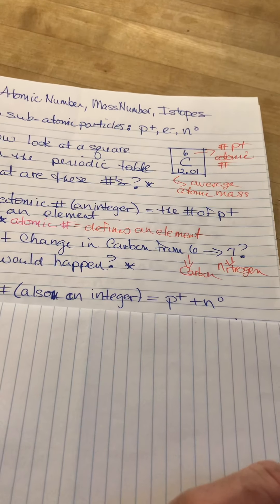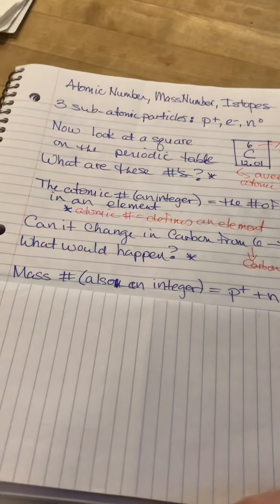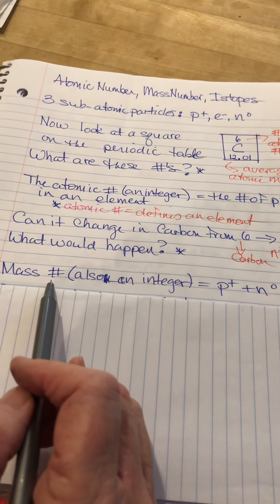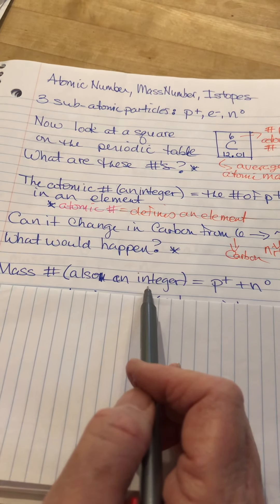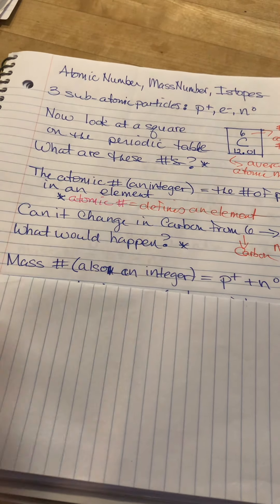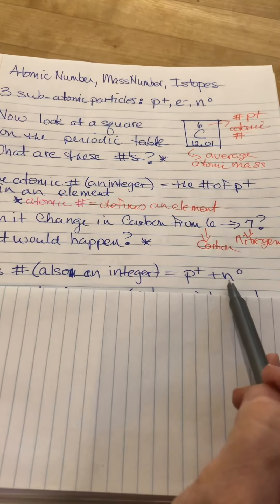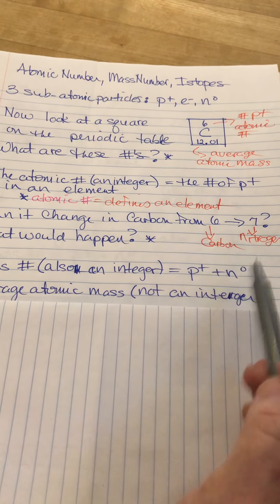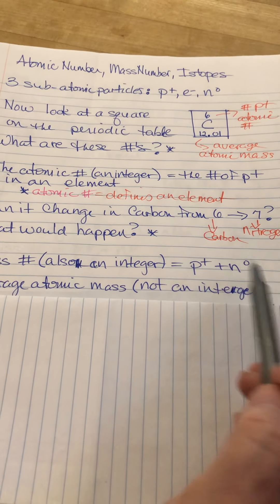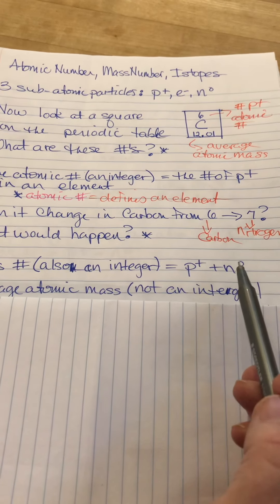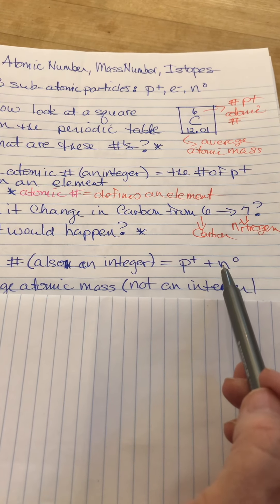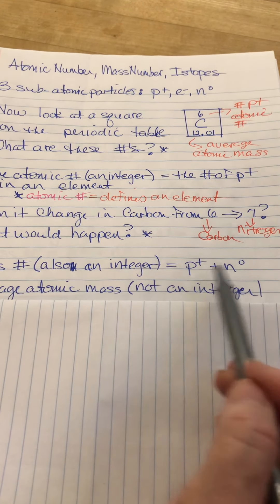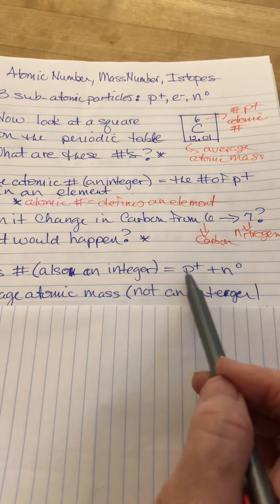There is another number which helps us identify an element, and it is known as the mass number. The mass number is also an integer, and it is the sum of the protons plus the neutrons. Protons plus neutrons. Those are the heavy guys. You don't count the electron in the notes, and that's because an electron is about one two thousandth the weight of either the proton or the neutron.